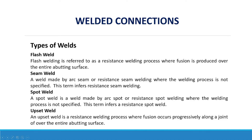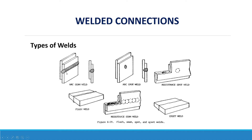Flash welding is referred to as a resistance welding process where fusion is produced over the entire abutting surface. A seam weld is made by arc seam or resistance seam welding — this term infers resistance seam welding. A spot weld is made by arc spot or resistance spot welding — this term infers a resistance spot weld. An upset weld is a welding process where fusion occurs progressively along a joint over the entire abutting surface. Shown are examples of seam weld, spot weld, resistance spot weld, flush weld, resistance seam weld, and upset weld.